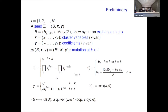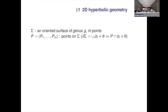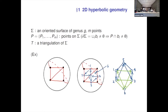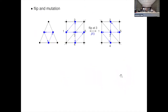Now I go to 2D hyperbolic geometry. The first slide is the same as yesterday's. For an oriented surface of genus g with m points, we have a triangulation of sigma. Each triangle has three vertices, all of which are one of the points in the point set. For a triangulation of the four-punctured sphere, we can draw each dual curve. The point to apply cluster algebra is to draw a dual triangle like this, and by flipping the triangulation — changing the diagonals — it is compatible with a mutation of the dual quiver.